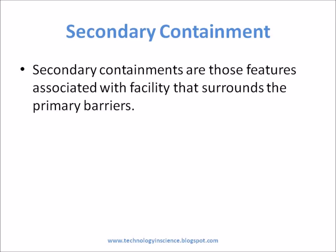Secondary Containment. Secondary containments are those features associated with the facility that surrounds the primary barriers. Examples include floors, walls, and ceilings, air locks, self-closing doors, differential pressure between spaces, exhaust filtration, as well as treating contaminated air, liquid, and solids. The function of secondary containment is to prevent both the release of microbes into the environment and to prevent contaminated organisms from contaminating the workplace.